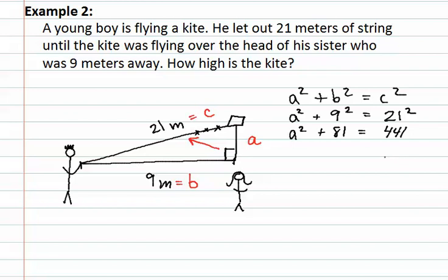We now must isolate the variable. We do so by subtracting the eighty-one from both sides. This gives us A squared equals three hundred and sixty.